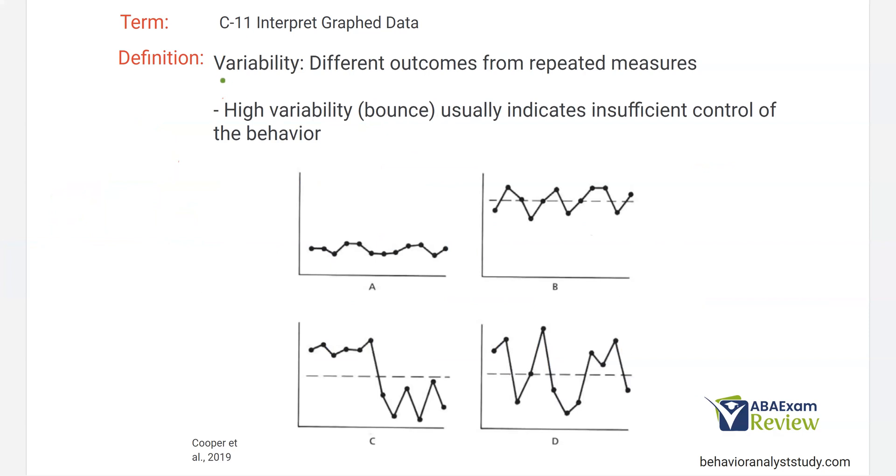First, let's look at variability. Different outcomes from repeated measures, meaning if I repeat the same thing over and over again, how different is the outcome? And high variability usually indicates insufficient control of the behavior, meaning if I'm measuring the same thing over and over again, and that behavior is going all over the place, we don't have much control over it, right?